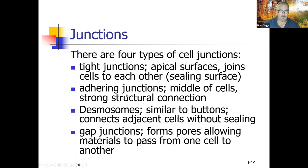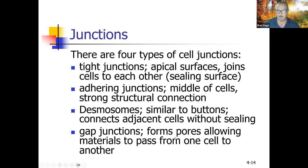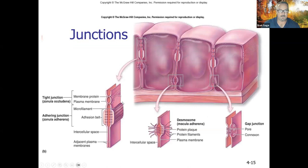There are four types of cell junctions. Tight junctions are on the apical surface, joining cells to each other and sealing the surface to prevent water loss. Adhering junctions are near the middle of cells and have a strong structural connection. Desmosomes are similar to buttons — they connect adjacent cells without sealing, so materials can flow between them. Gap junctions form pores allowing material to pass from one cell to another — like a little porthole between cells.